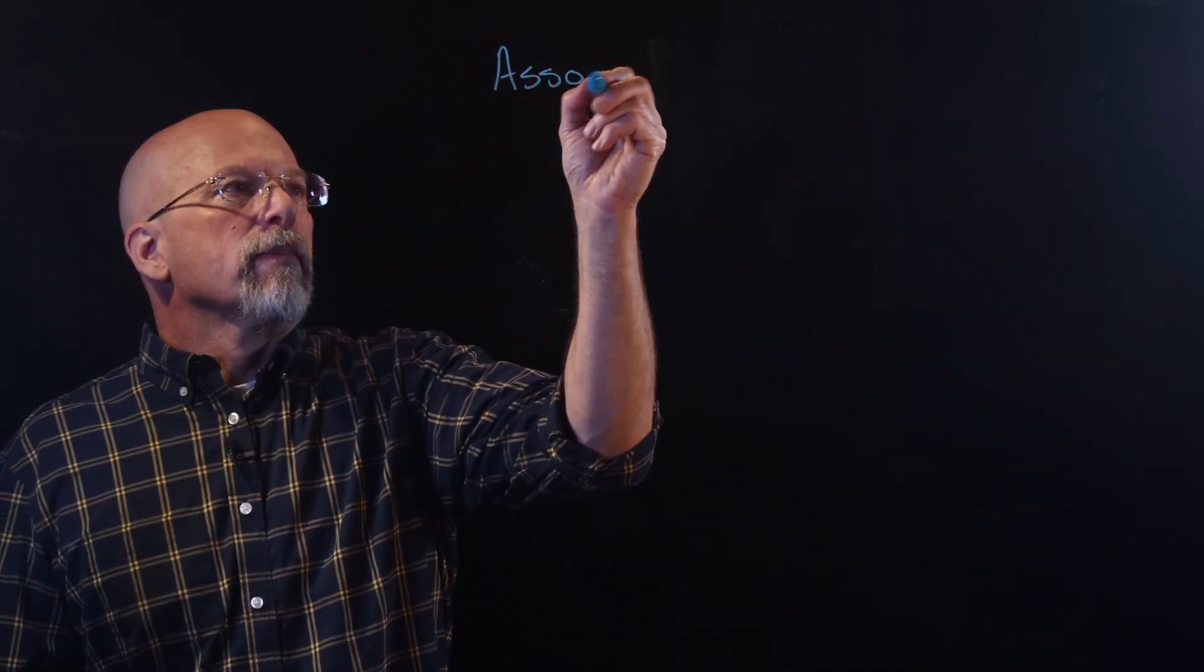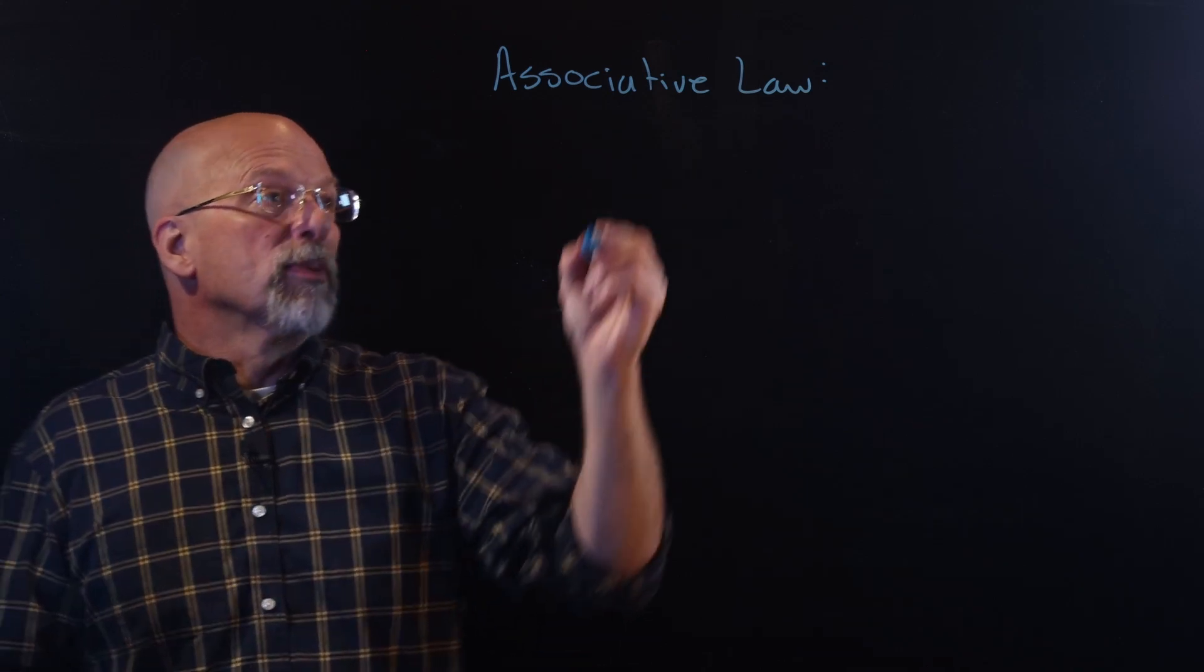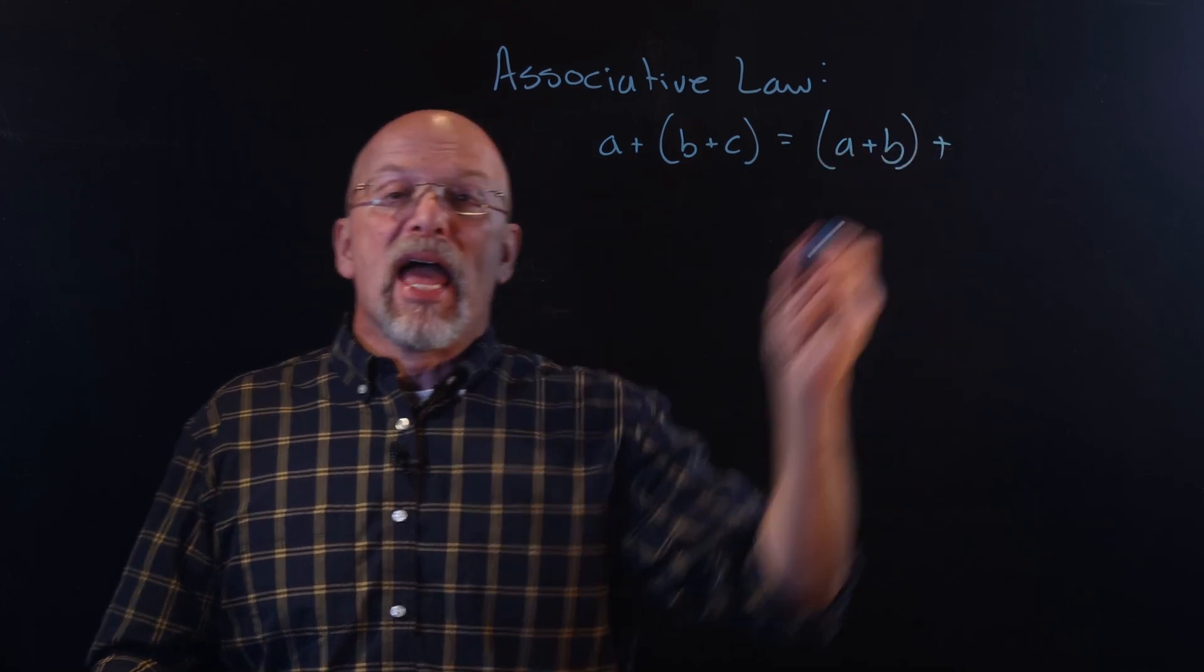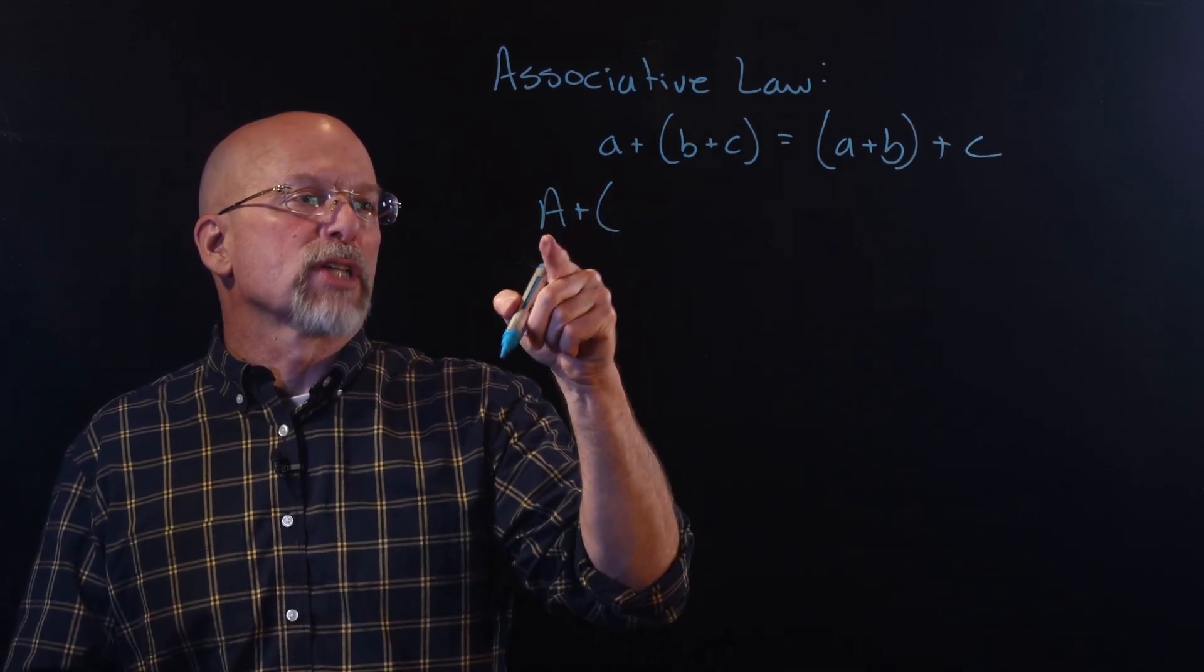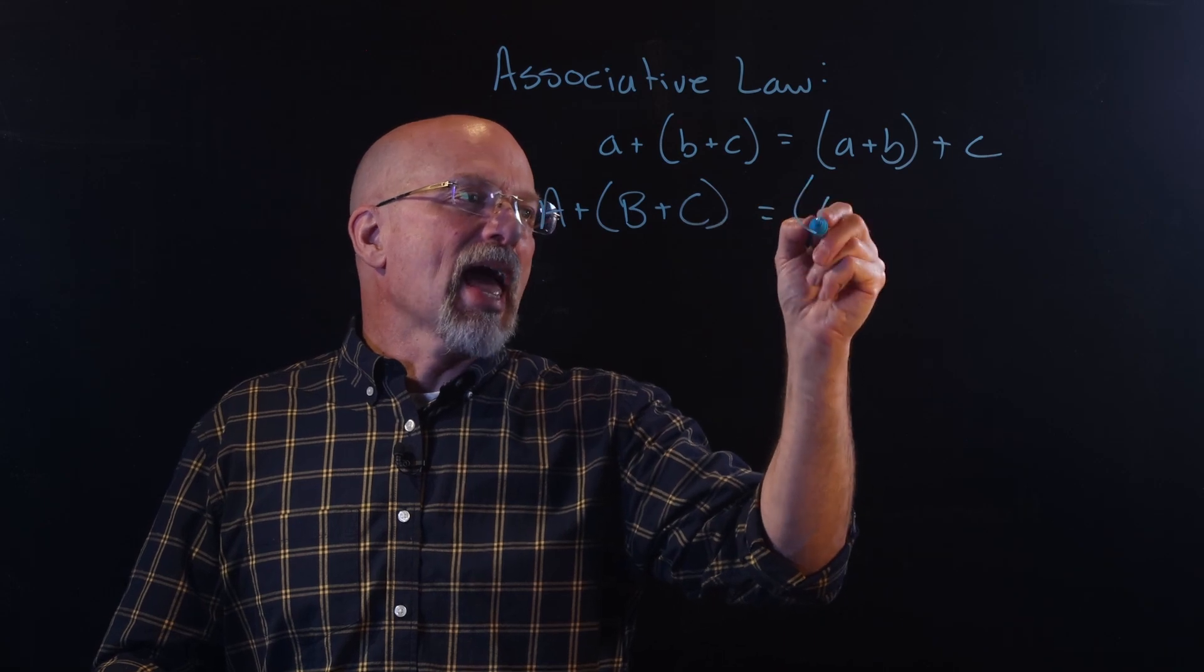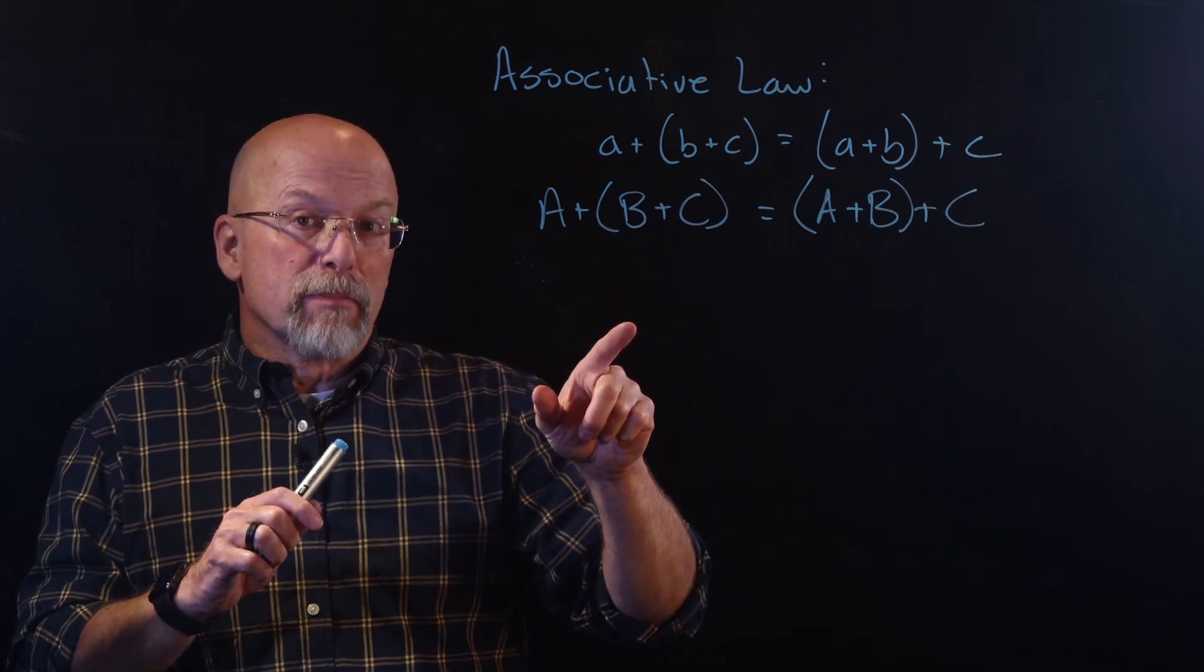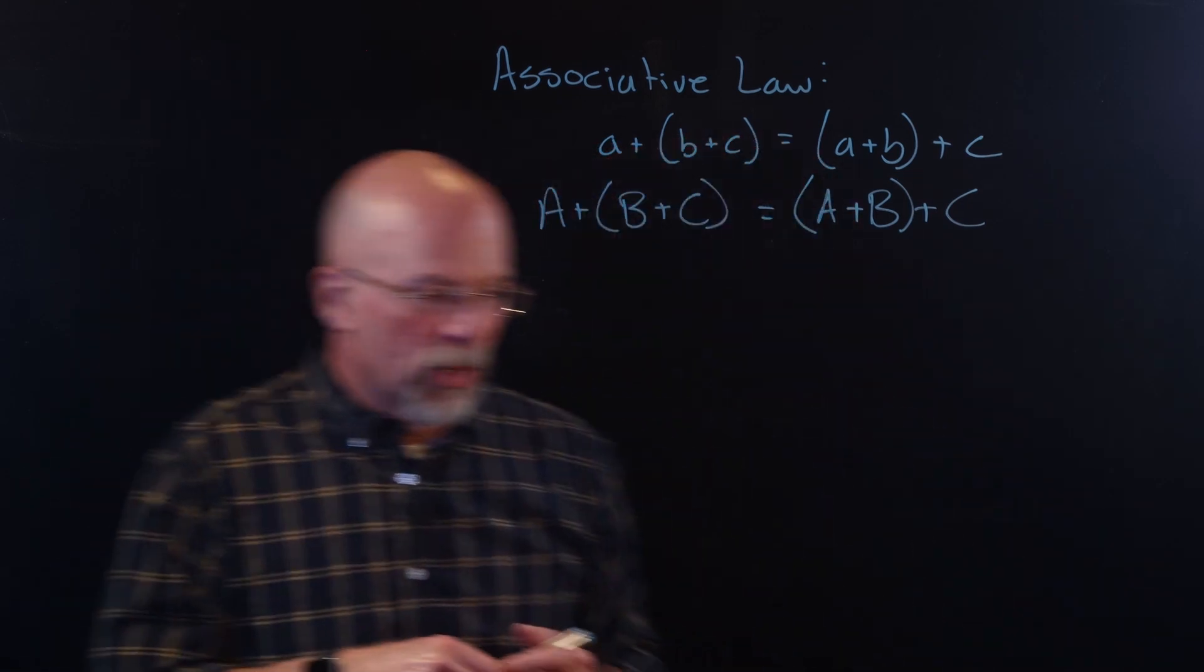The associative law. The associative law in basic arithmetic said that A plus the sum of B plus C—in other words, we add B and C together first and then add A—it's the same as adding B and A together first and then adding C. Turns out that in matrix arithmetic, this also works. I can add matrices B and C together first and then add A, or I can add matrix A to matrix B and then add C. Now, remember, it doesn't matter the dimensions of each one of these matrices as long as all three matrices have exactly the same dimension, and then our result is going to have exactly the same dimension as those three.